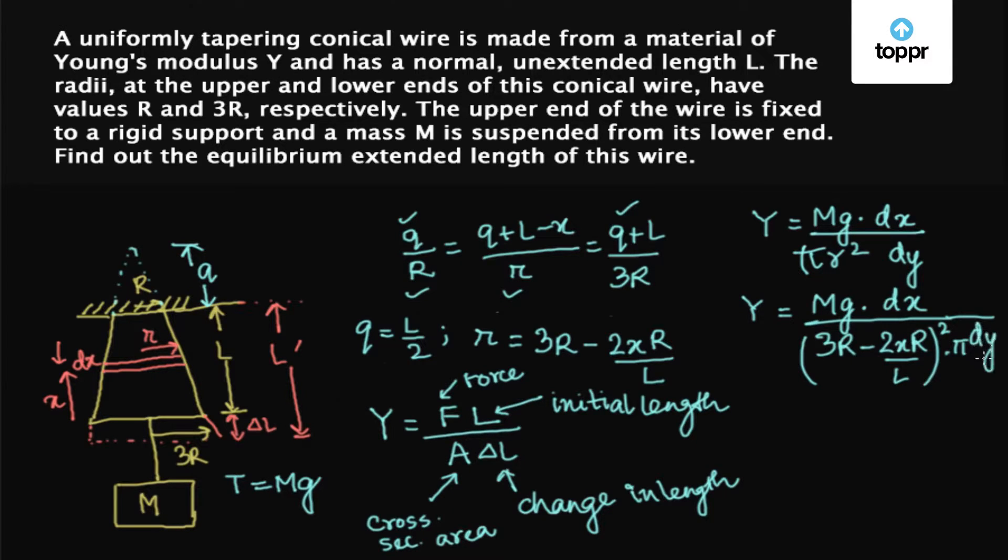Now taking DY on the left hand side and Y on the left hand side, we get DY equals MG upon π Y into DX upon 3R minus 2X R upon L whole square. Now integrating both sides of this equation, DY from 0 to Y and the right hand side equation from 0 to L.